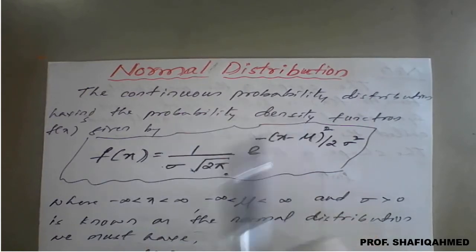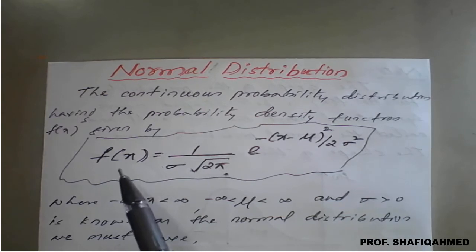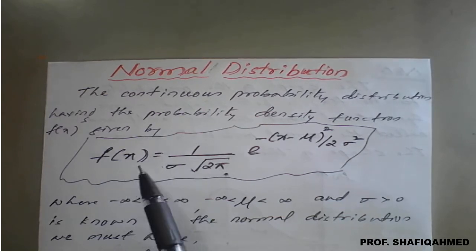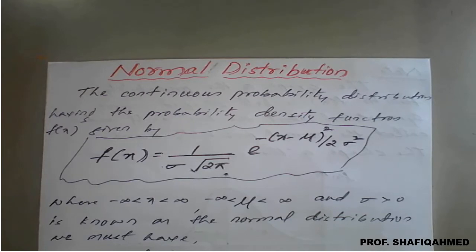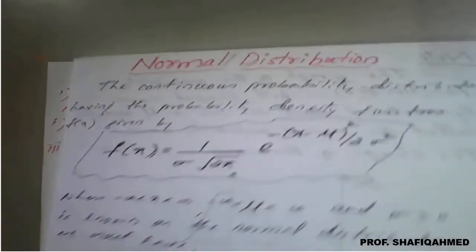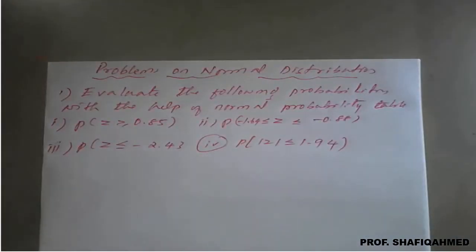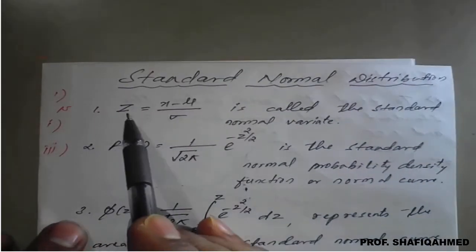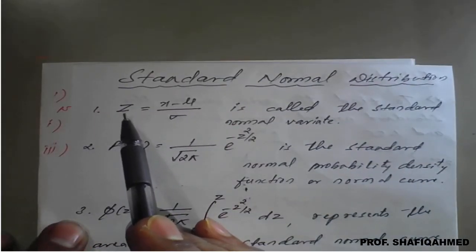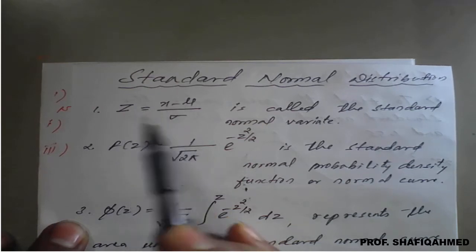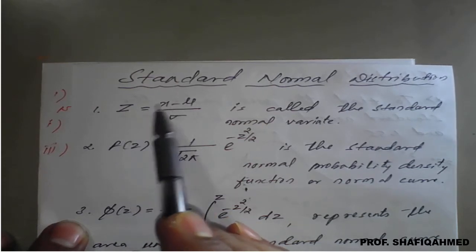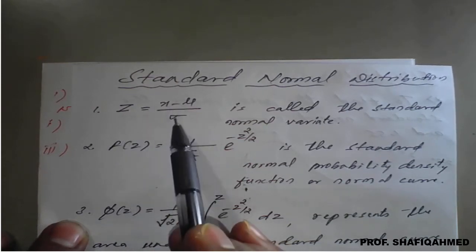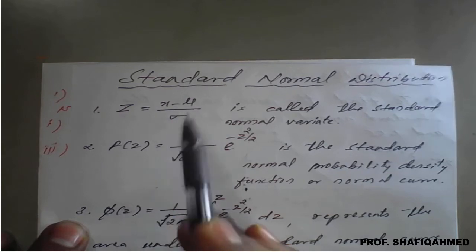In normal distribution, we have already seen the formula for the probability density function f(x) and the explanation of normal distribution in the previous class. The important thing I want to recollect is the z-value, that is the standard normal variate, which is z equals x minus mu divided by sigma.